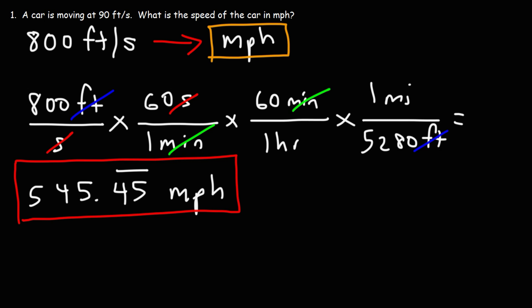So that's how you can convert from feet per second to miles per hour. Basically, you need to multiply by 3,600 and then divide by 5,280, and that's going to give you your answer.